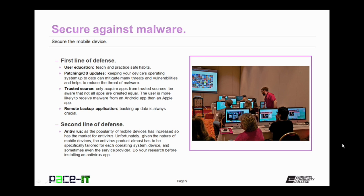Your first line of defense in the mobile device arena is user education. You should teach and practice safe mobile device habits. Don't visit shady websites with your mobile device. Patching your operating system and keeping current on updates is another portion of your first line of defense — this can mitigate many threats and vulnerabilities and helps to reduce the threat of malware. You should only acquire apps from a trusted source. Be aware that not all apps are created equal; you're much more likely to download malware on an Android device than on an Apple iOS device. Your remote backup application is also part of your first line of defense — backing up your data is always crucial.